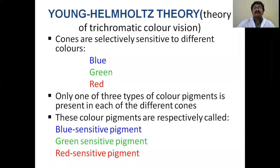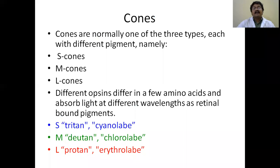According to the Young-Helmholtz trichromatic theory, cones are selectively sensitive to different types of colors — blue, green, and red. Only one type of color pigment is present in each different cone. The three color pigments are blue-sensitive, green-sensitive, and red-sensitive. The S-cones contain cyanolabe, M-cones contain chlorolabe, and L-cones contain erythrolabe.